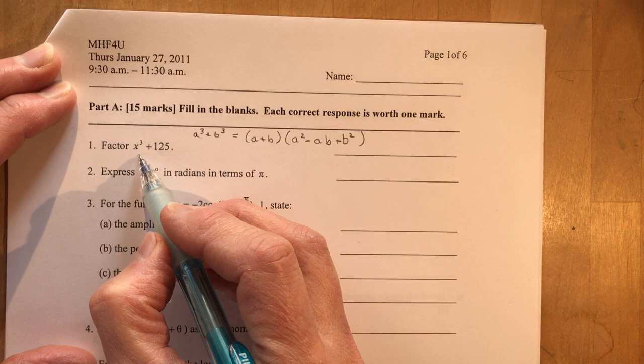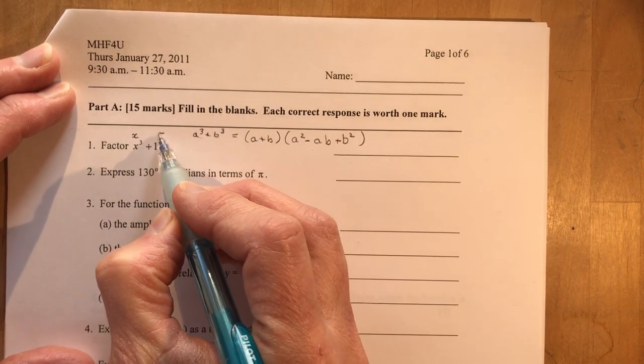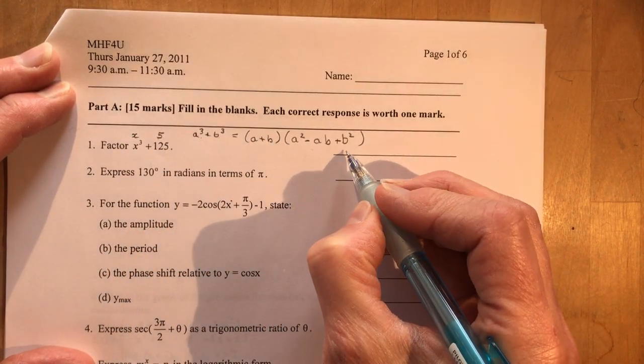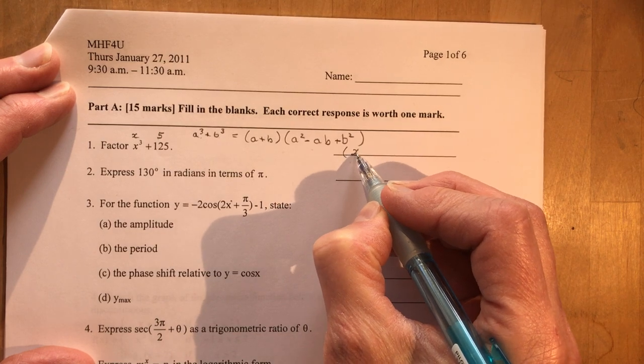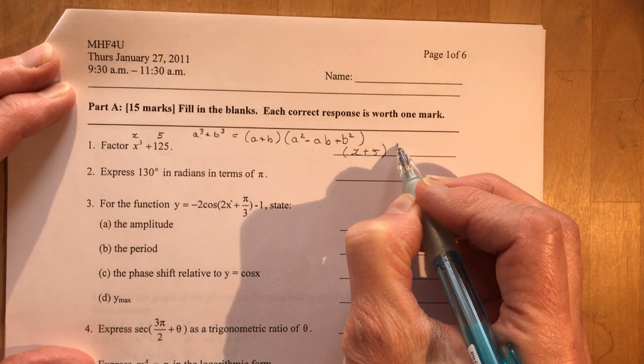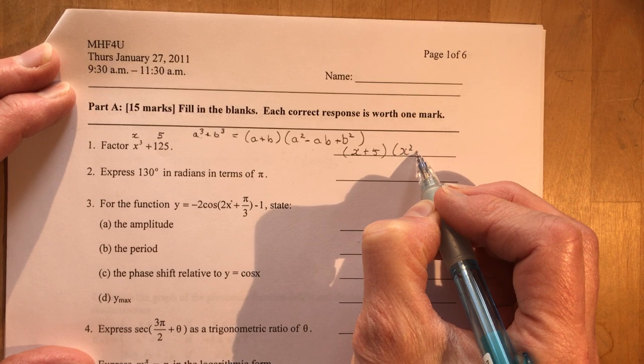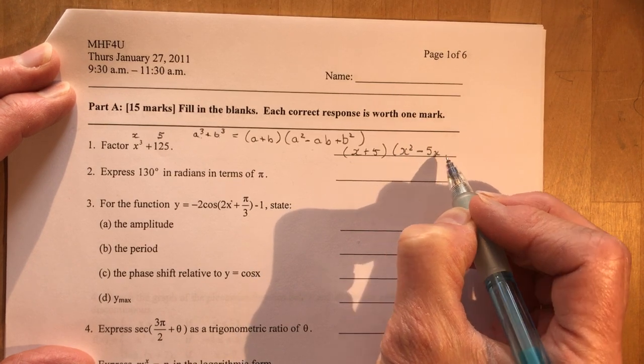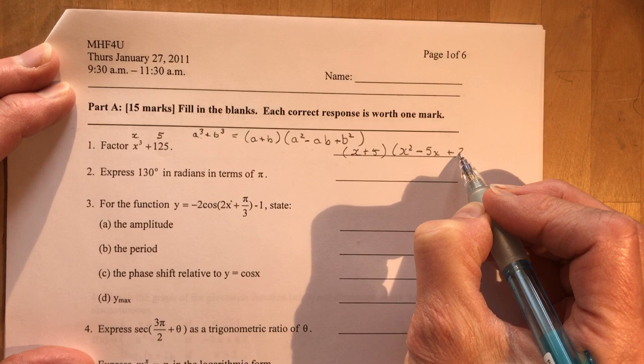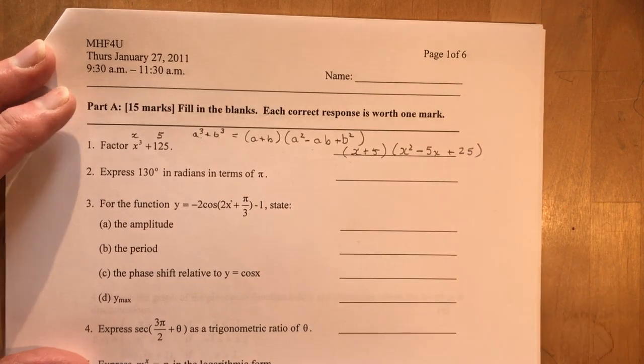Okay so what's a cube root of x cubed? x. What's a cube root of 125? 5 and you're off to the races. So you have x plus 5 times x squared minus 5x plus 25. There you go you got one mark. Yay.